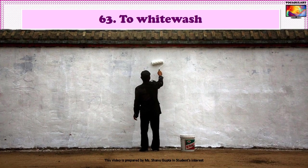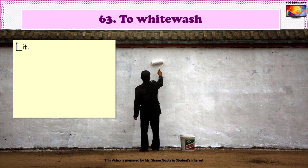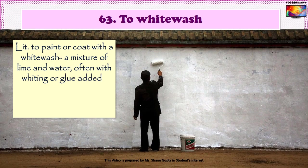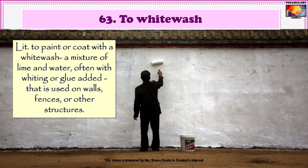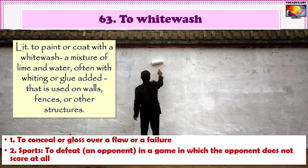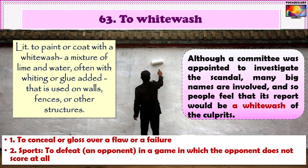Idiom number 63 is 'To whitewash.' It literally means to paint or coat something with a whitewash, which is a mixture of lime and water, often with whiting or glue added. Just like whitewashing covers up the shabby looks and conceals defects, the phrase figuratively means to conceal or gloss over a flaw, a failure, or a wrongdoing. For example: 'Although a committee was appointed to investigate the scandal, many big names are involved and so people feel that its report would be a whitewash of the culprits.'